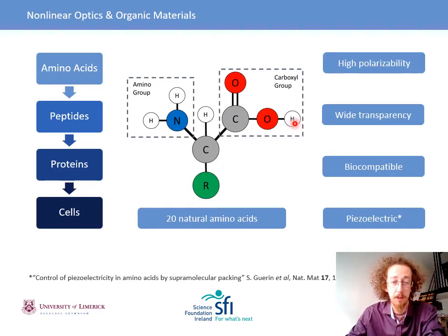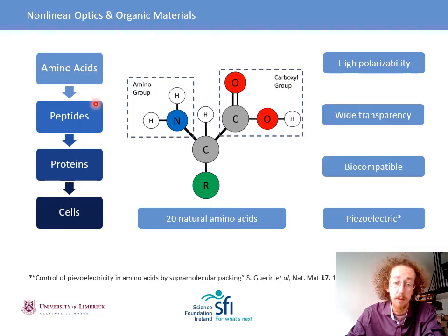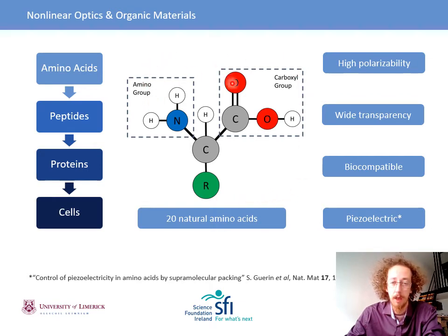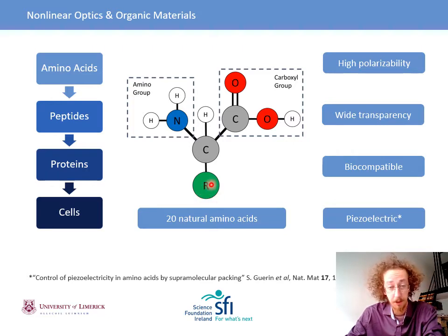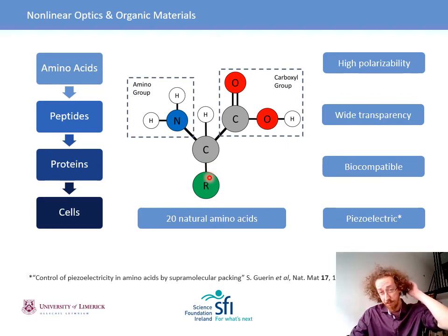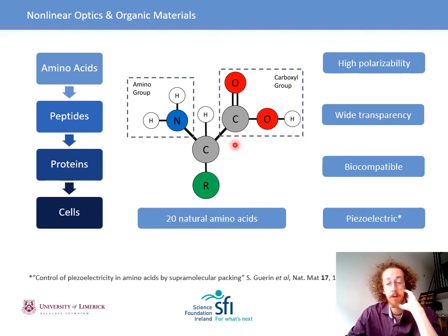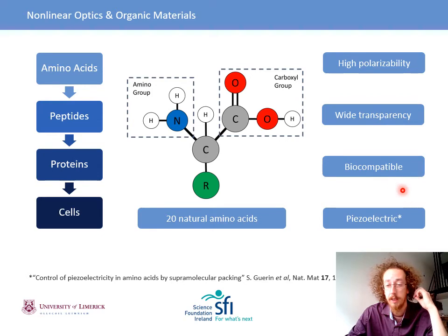What material are we studying? Amino acids — fundamental building blocks of more complicated biomolecules. Amino acids can be strung together to make peptides, peptides to make proteins, and proteins go on to make cells. We have our amino group, carboxyl group, bonded to a carbon atom, with a different radical hanging off one side. This radical gives us different amino acids, and we're using the simplest achiral one called glycine, where the radical is a single hydrogen atom. These amino acids have great properties for non-linear optics: high polarizability, a wide transparency range, biocompatibility, and they're piezoelectric as well.